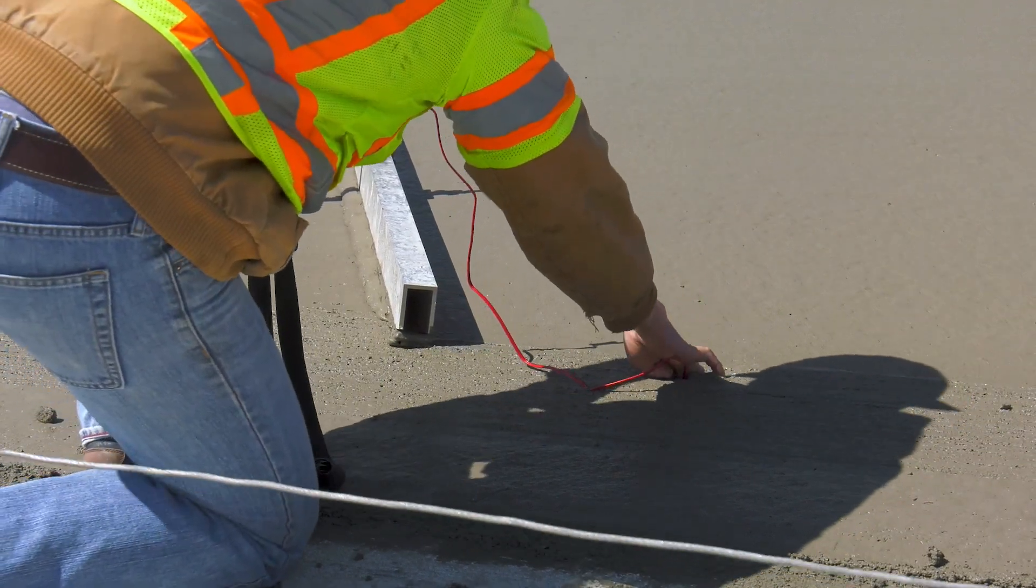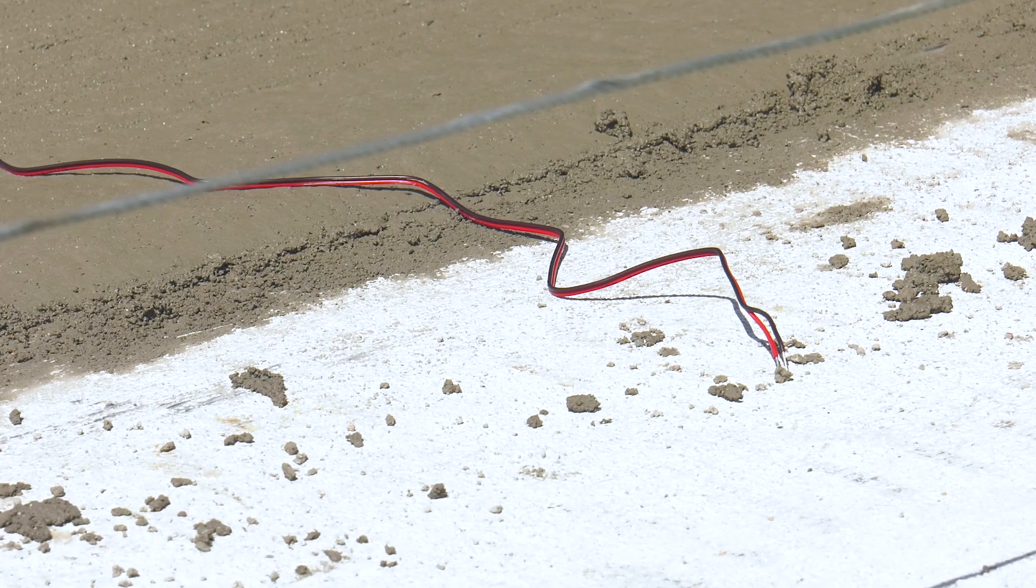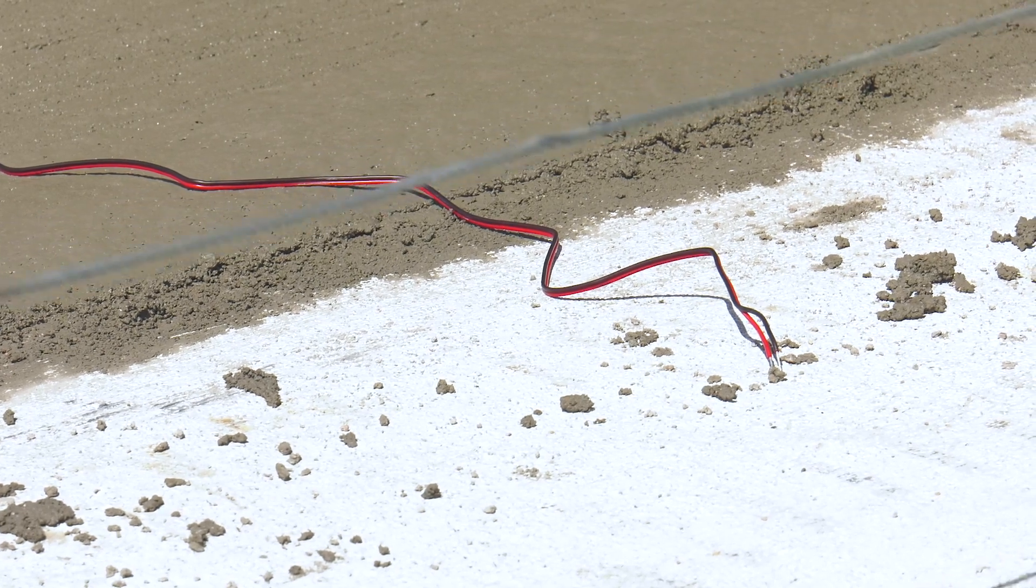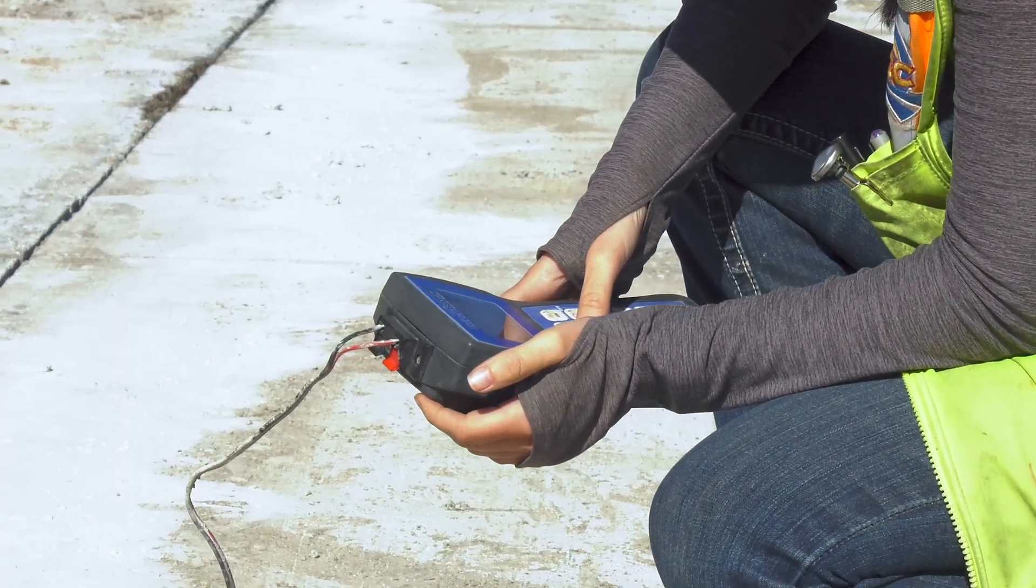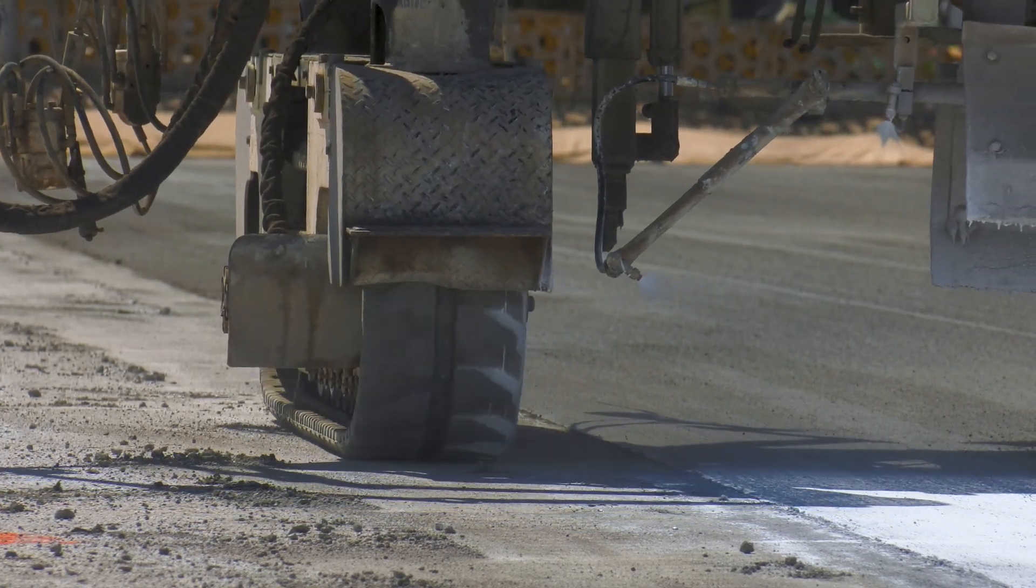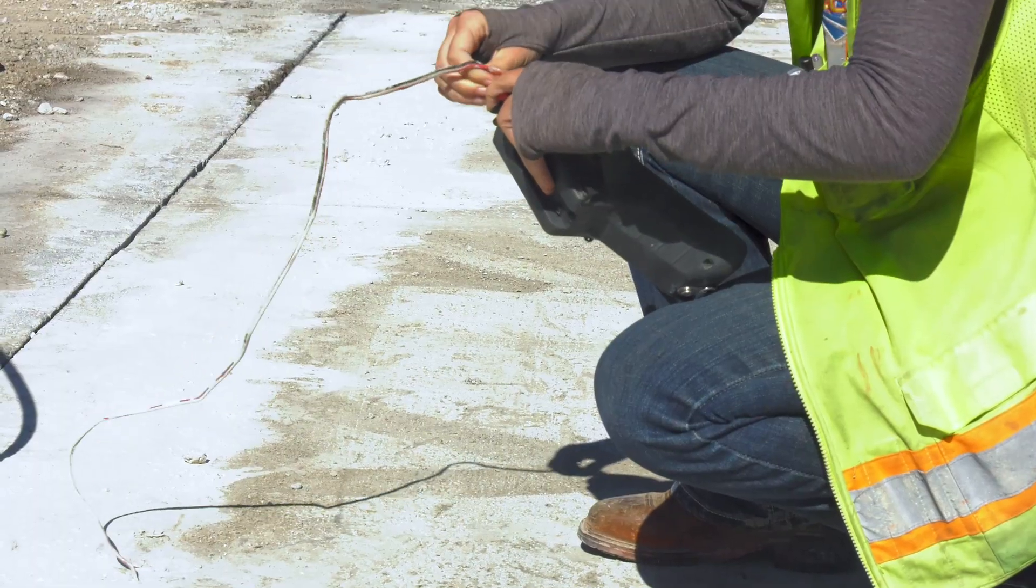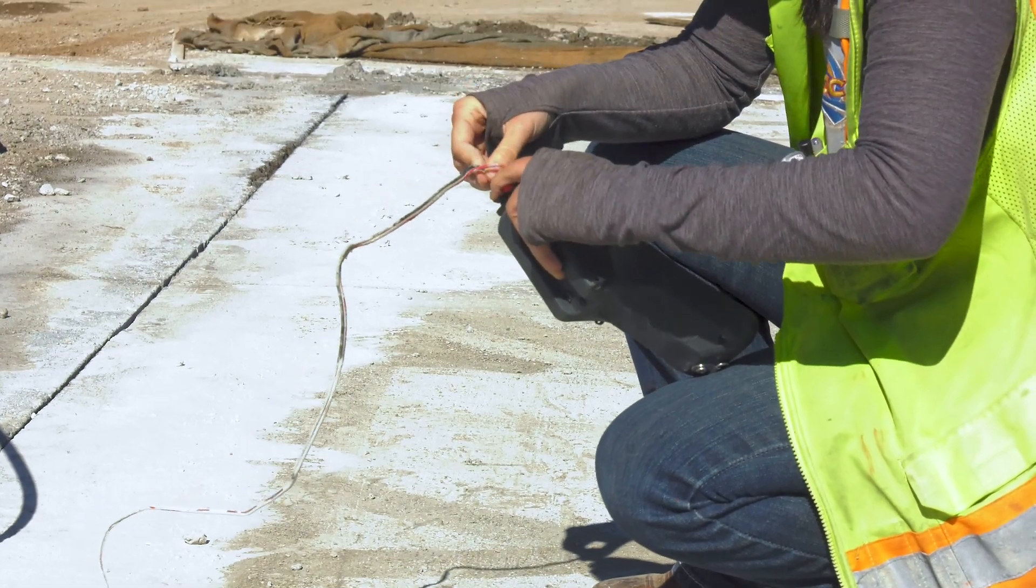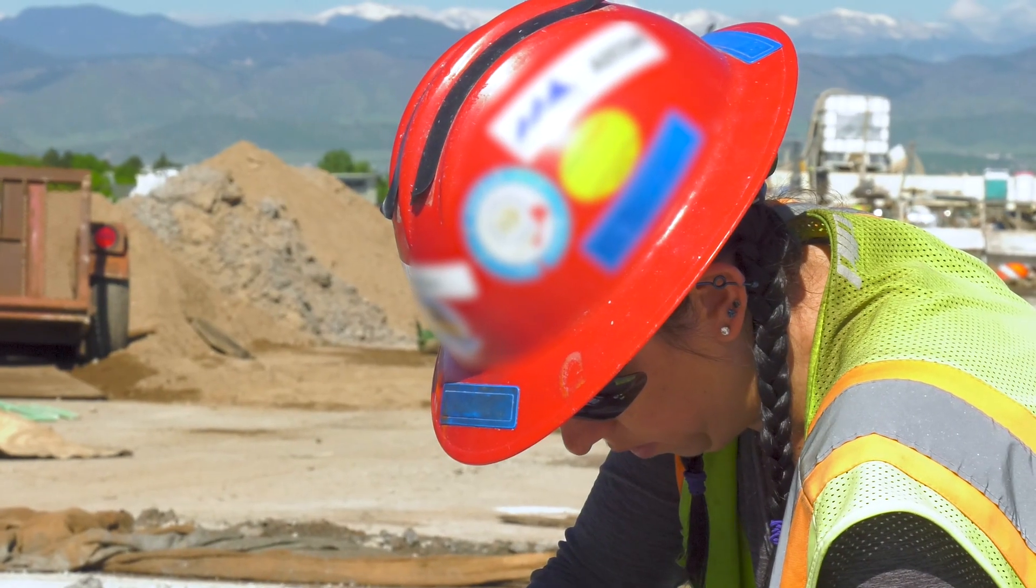During slip form paving, sensors are placed at the desired depth. The wires from the sensors are exposed from the fresh concrete for purposes of data collection, and finishing operations are performed around the exposed wires. The exposed wires are connected to a maturity meter to gather time and temperature data.